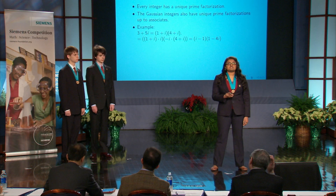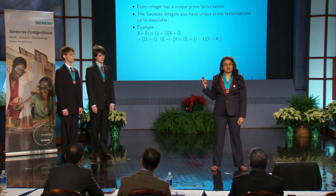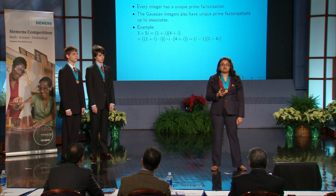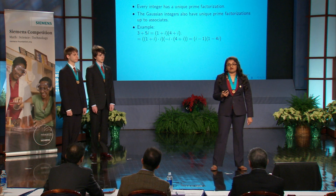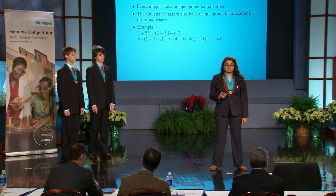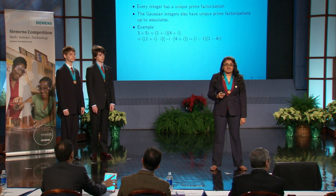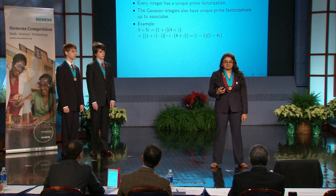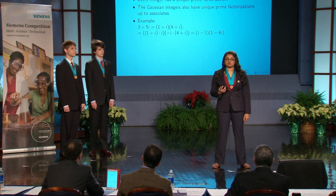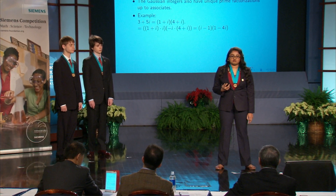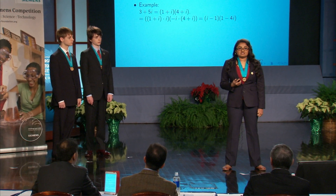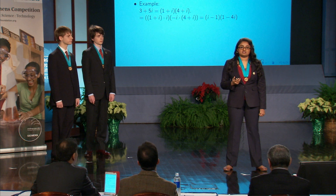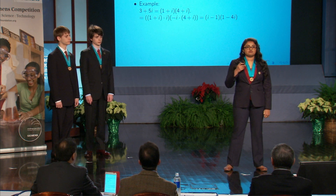For instance, the Gaussian integer 3 plus 5i admits the factorization (1 plus i) times (4 plus i). If I multiply the first factor by i and the second by minus i, I obtain the seemingly new factorization (i minus 1) times (1 minus 4i). However, since i times minus i equals 1, this is really the same factorization.